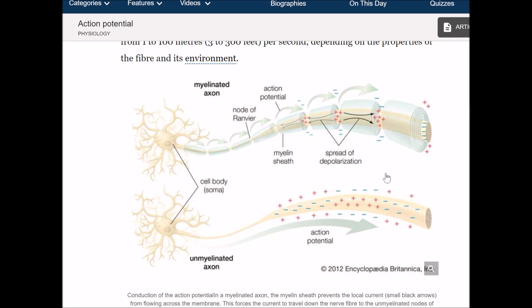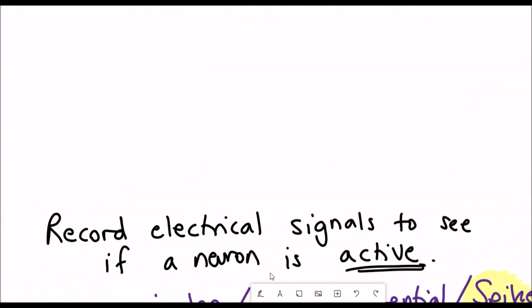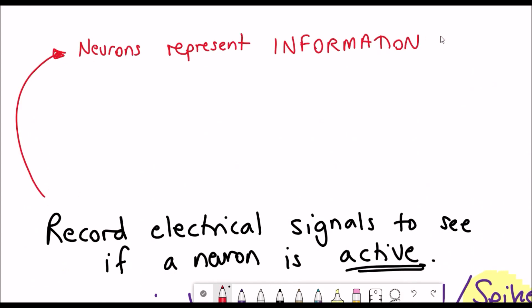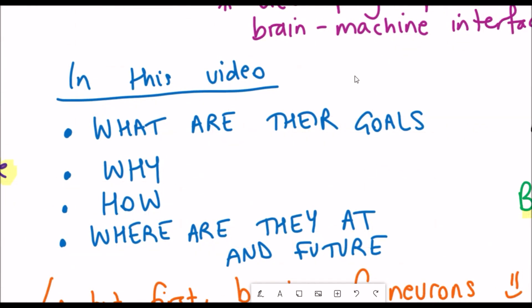Our brains have around a hundred billion neurons so that's a lot of information in our brain and this information isn't just which neurons are active or inactive, it also depends on the frequency of these spikes and also their timing.